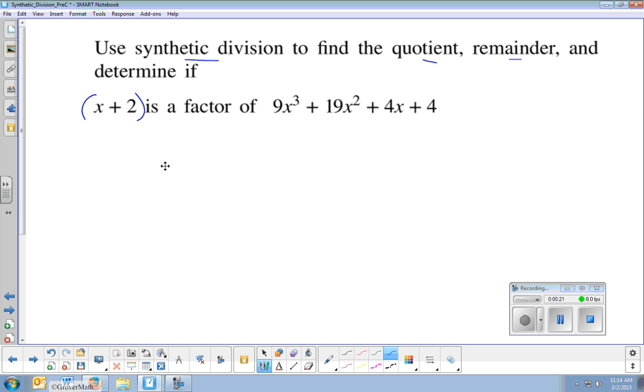So the past couple of days, we've been doing this with long division. And the remainder theorem, which was our previous lecture, discusses that if this divided by this, we get a quotient, which we'll definitely get. But if we get a remainder of 0, then that means yes, it is a factor.